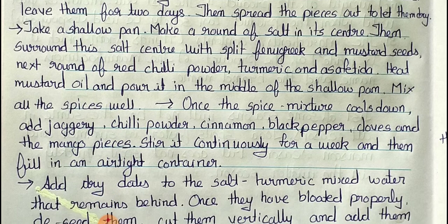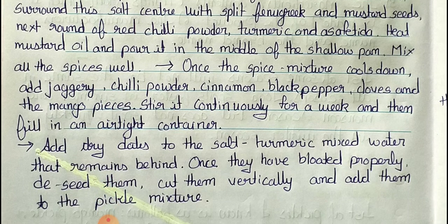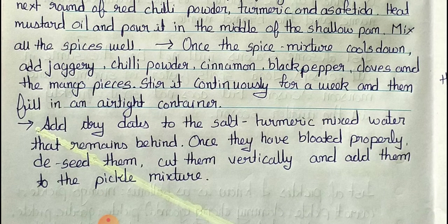Next point: Add dry dates to the salt and turmeric mixed water that remains. Once they have bloated properly, deseed them, cut them vertically, and add them to the pickle mixture.